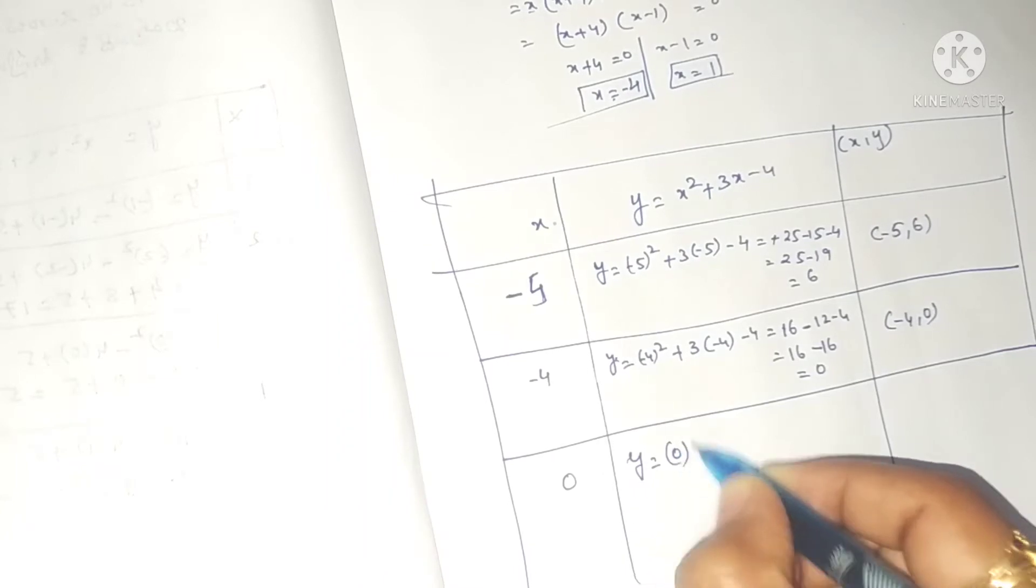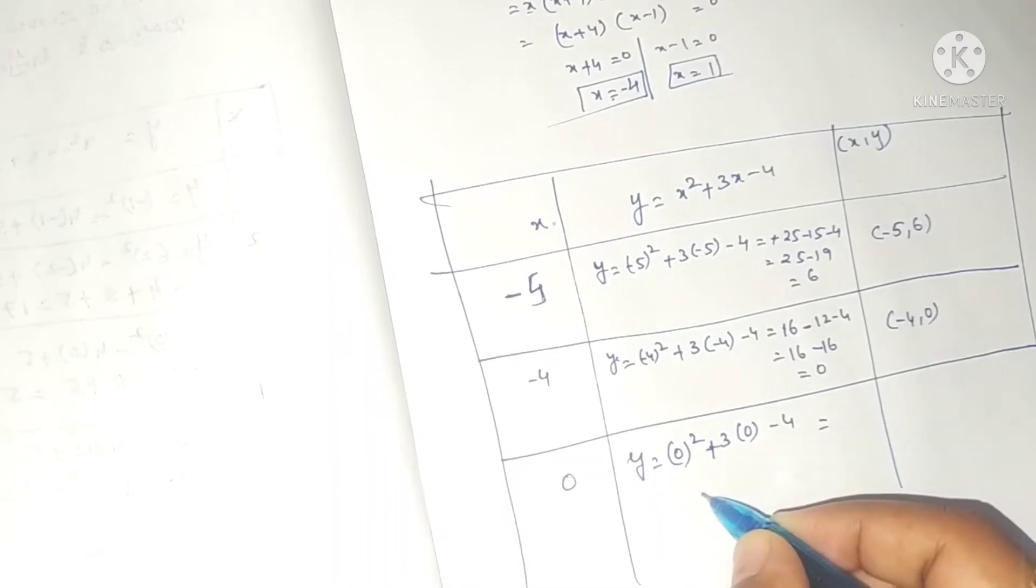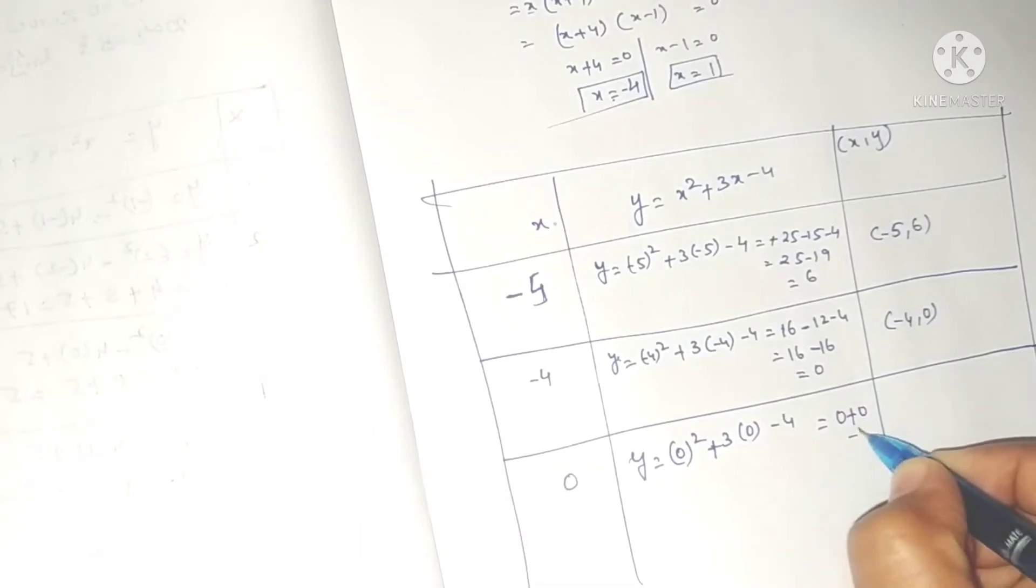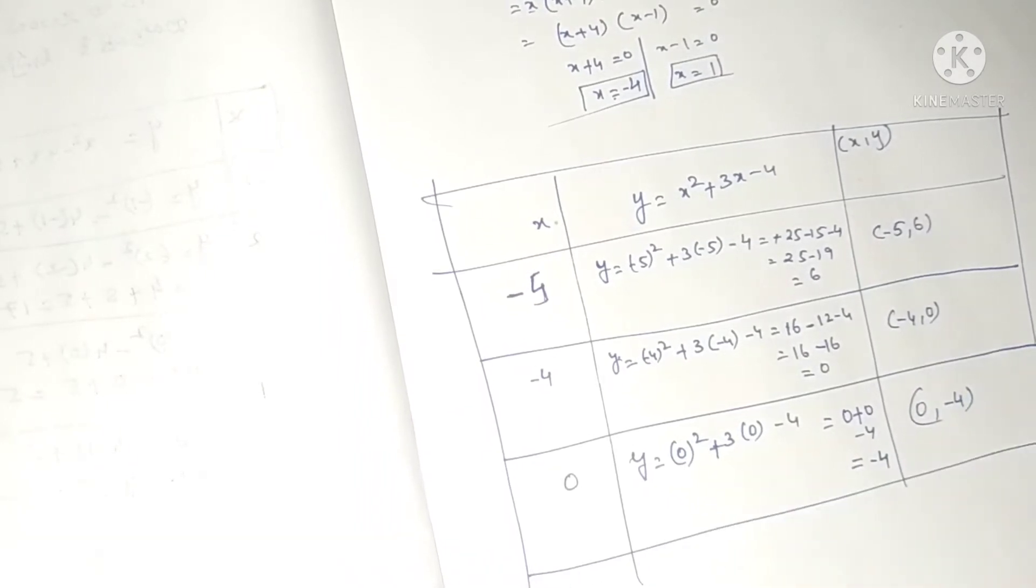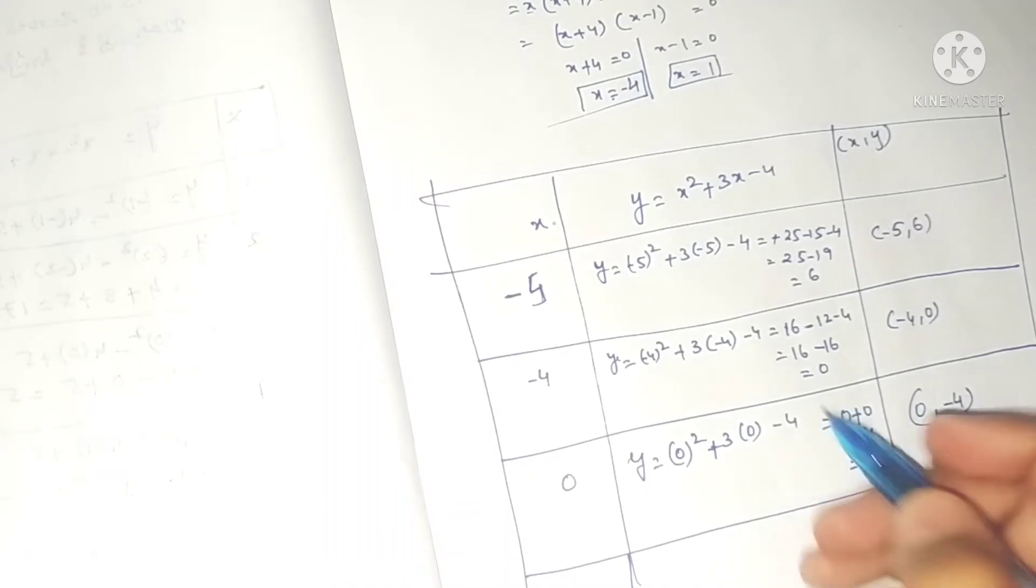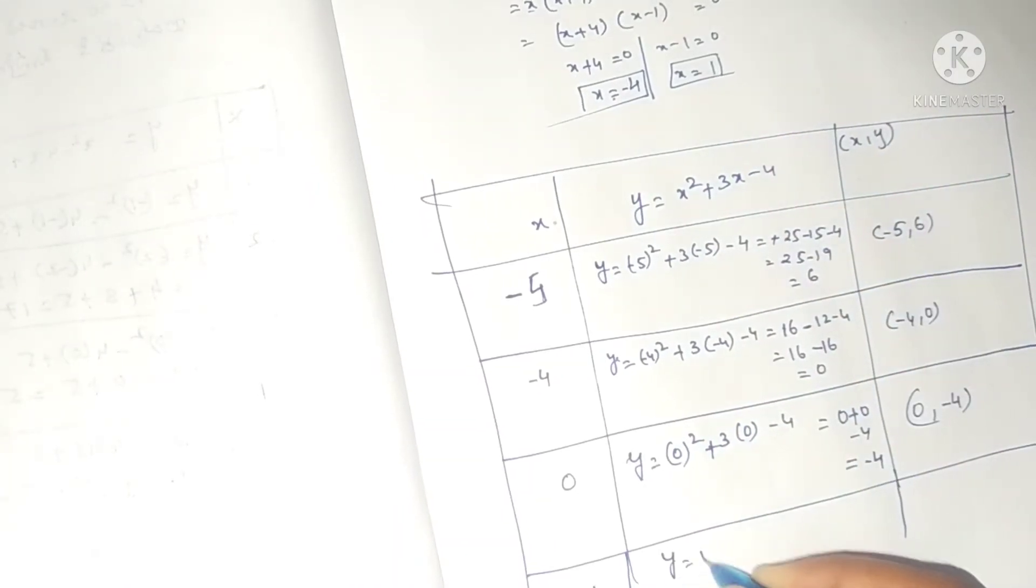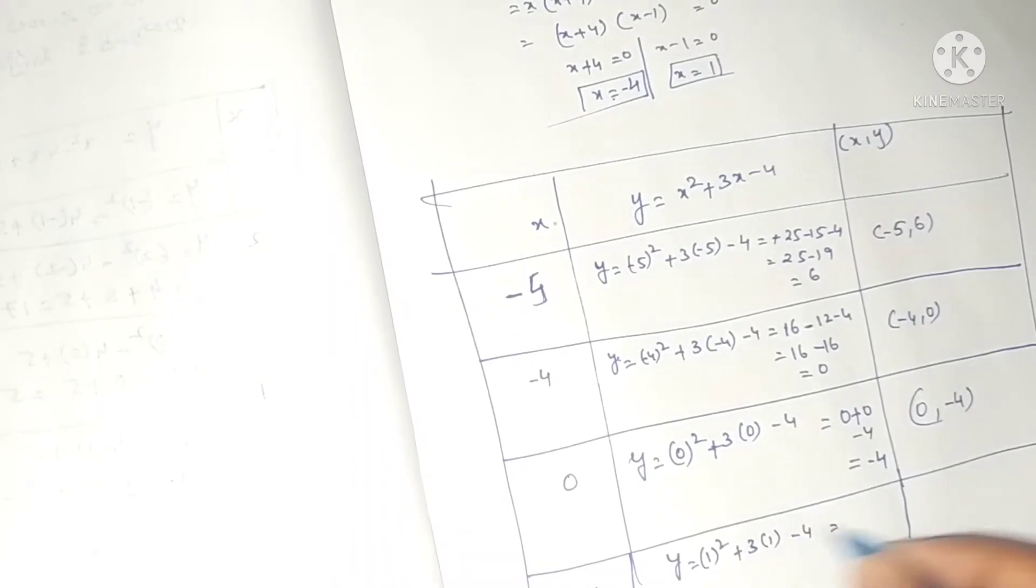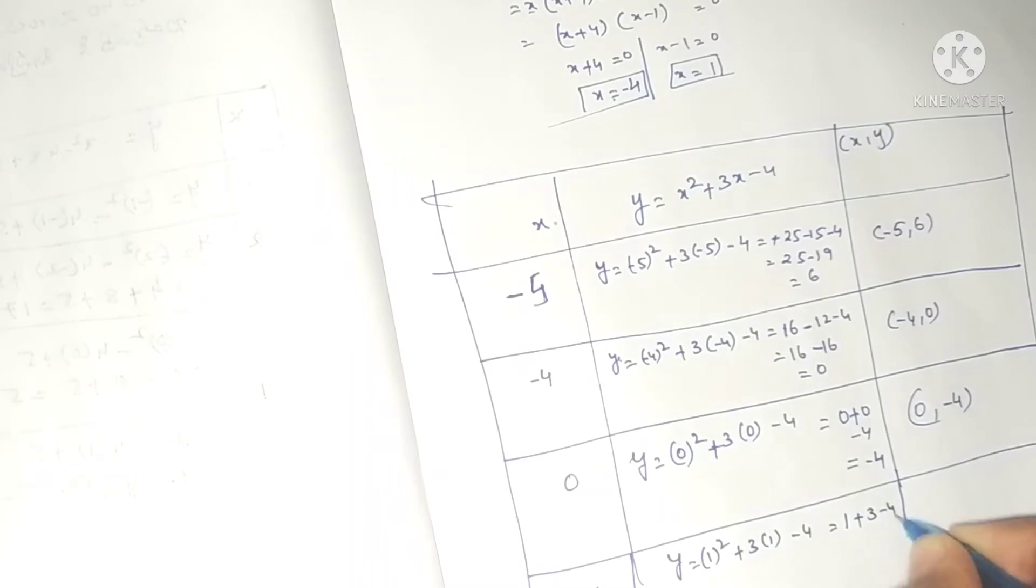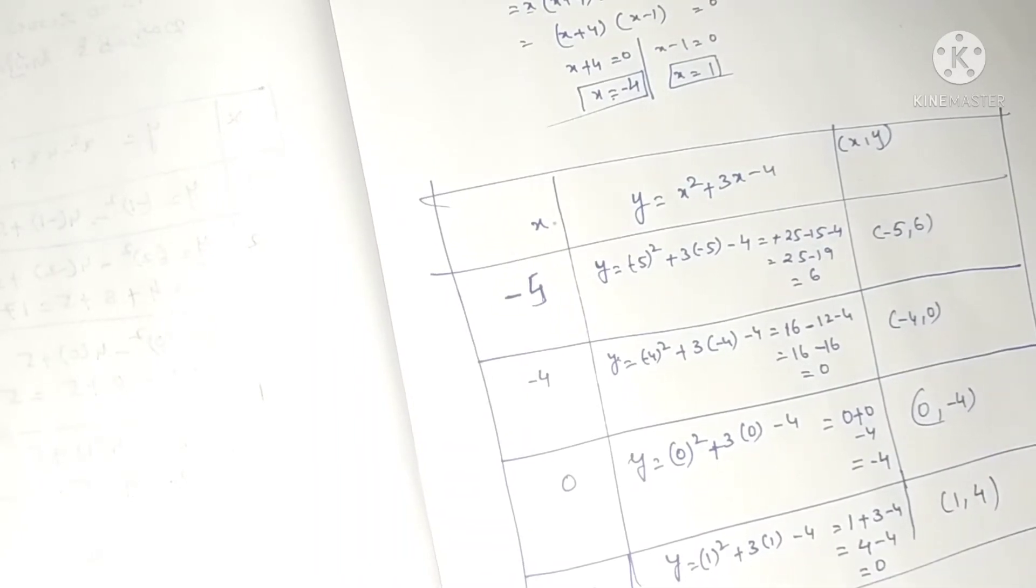When x is 0, y equals 0 square plus 3 into 0 minus 4, which equals minus 4. When x is 1, that's 1 plus 3 minus 4 equals 0. So we have 0 comma minus 4 and 1 comma 0.